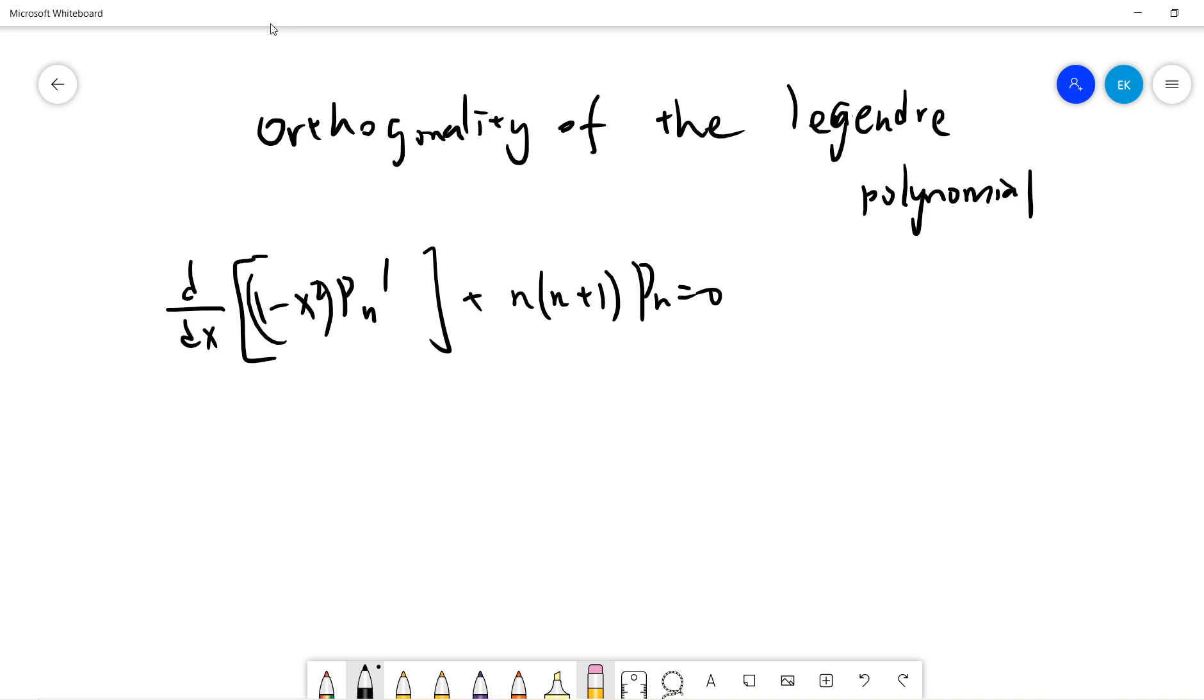So you know, basically by the Sturm-Liouville problem, then we can already show that the integral from minus 1 to 1 of Pn(x) and Pm(x) dx is 0 if m is not the same as n. So this is from the previous Sturm-Liouville problem.